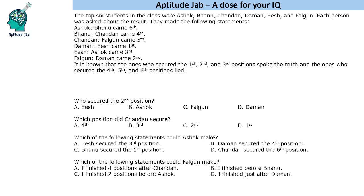Hello everyone, welcome to AptitudeJab. This problem states that the top 6 students in the class were Ashok, Bhanu, Chandan, Daman, Isha, and Fagun. Each person was asked about the result and they made the following statements. Apart from this, we are given that the first 3 people spoke the truth and the 4th, 5th, and 6th lied.